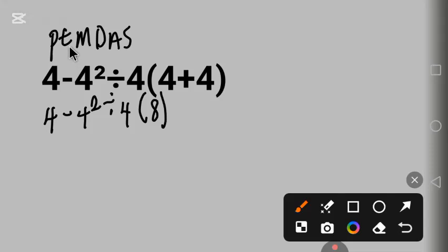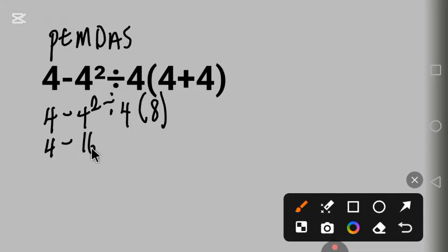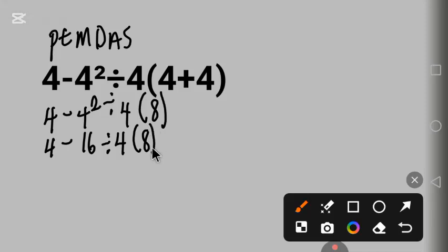Next is exponent. The exponent we have here is 4 squared. 4 squared is 16. So we now have: 4 minus 16, divide by 4, times 8 in parentheses.